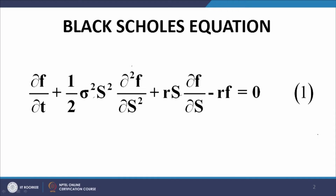Welcome back. Let us continue. Towards the end of the last lecture, we had derived the Black-Scholes equation working on the premise of the Ito equation. We started with the Ito equation and wrote down the Ito equation for a derivative, keeping in view the infinitesimal model or the log-normal model, and on that basis we arrived at the Black-Scholes equation, which is given on this slide.